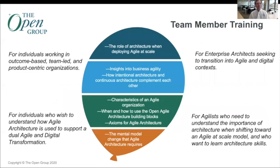These are our initial thoughts on the syllabus for an Open Agile Architecture team member training course. This would be targeted at individuals working in outcome-based, team-led and product-centric organizations; individuals who wish to understand how agile architecture is used to support dual agile and digital transformation; enterprise architects seeking to transition into agile and digital contexts; and agilists who need to understand the importance of architecture when shifting towards an agile at scale model and want to learn architecture skills. The syllabus will cover: the role of architecture when deploying agile at scale; insights into business agility; how intentional architecture and continuous architecture complement each other; characteristics of an agile organization; when and how to use the Open Agile Architecture building blocks; the axioms for agile architecture; and the mental model change that agile architecture requires.